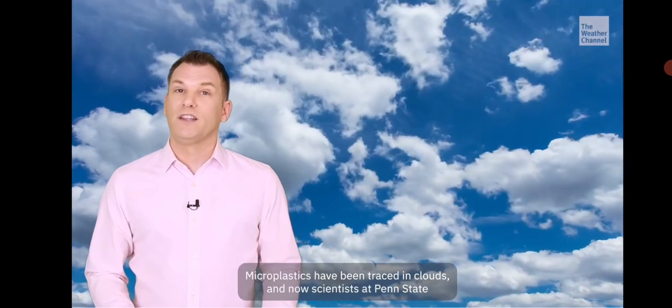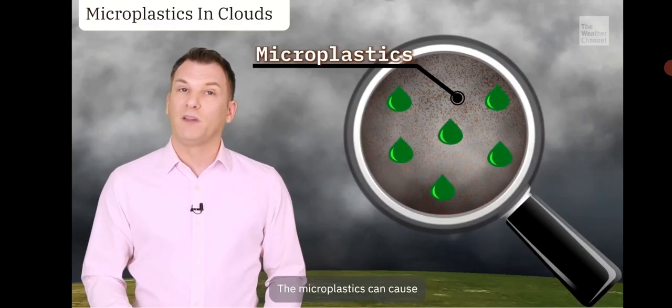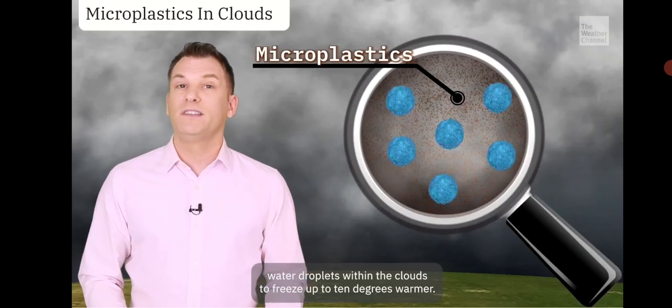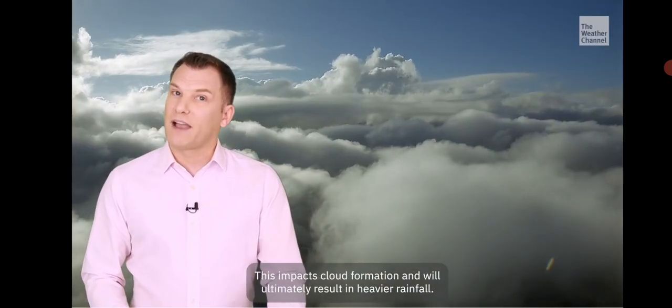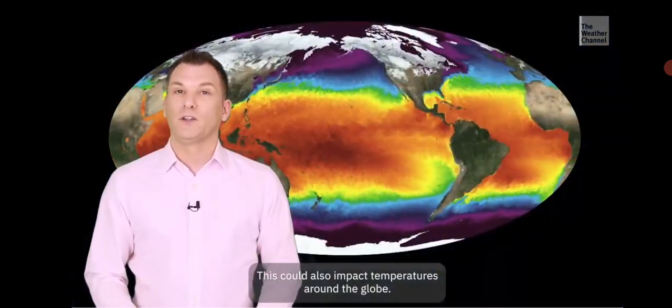Microplastics have been traced in clouds, and now scientists at Penn State have discovered what this means. The microplastics can cause water droplets within the clouds to freeze up to 10 degrees warmer. This impacts cloud formation and will ultimately result in heavier rainfall. This could also impact temperatures around the globe.